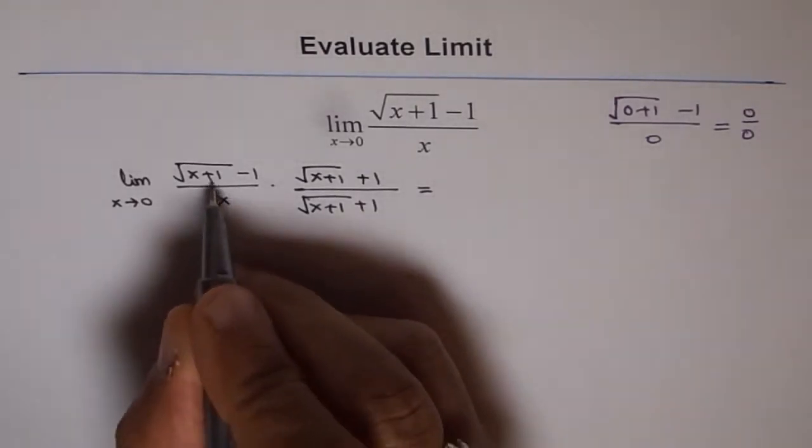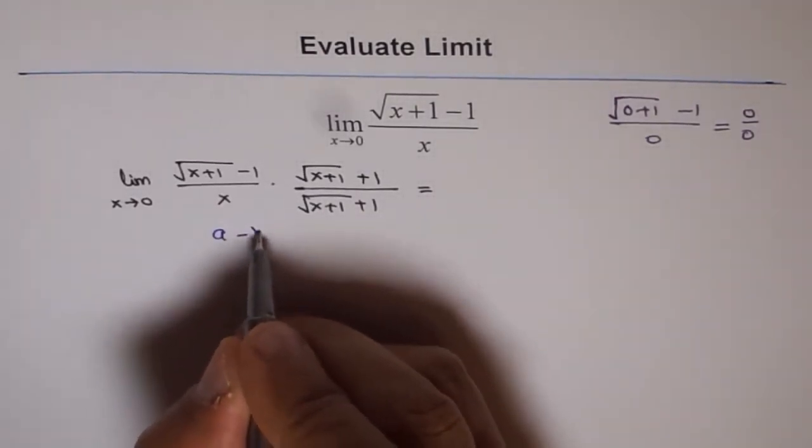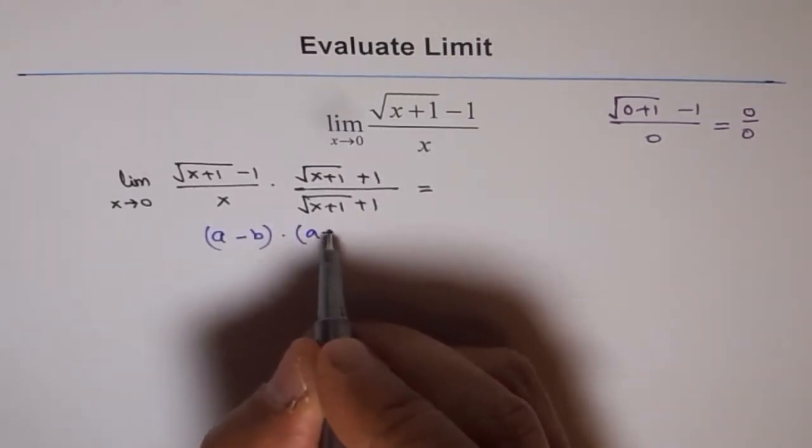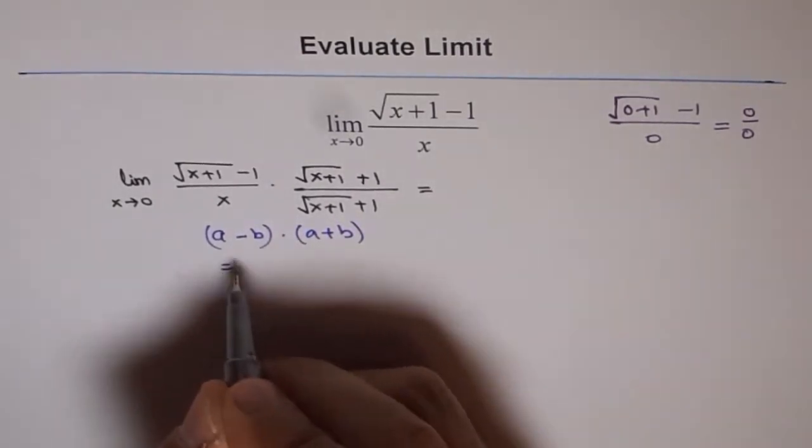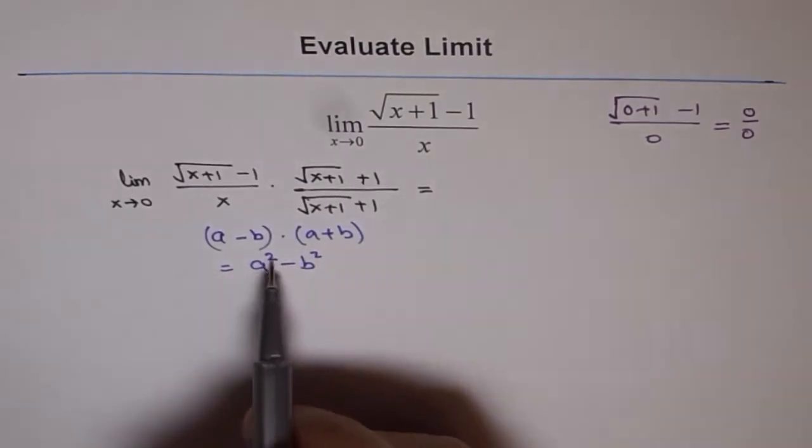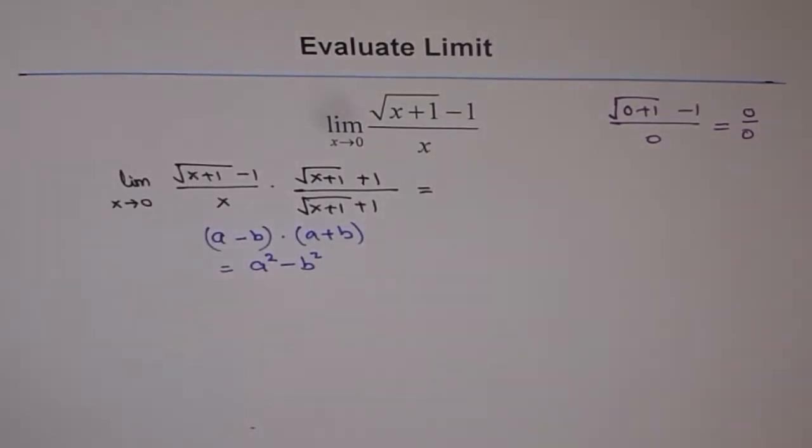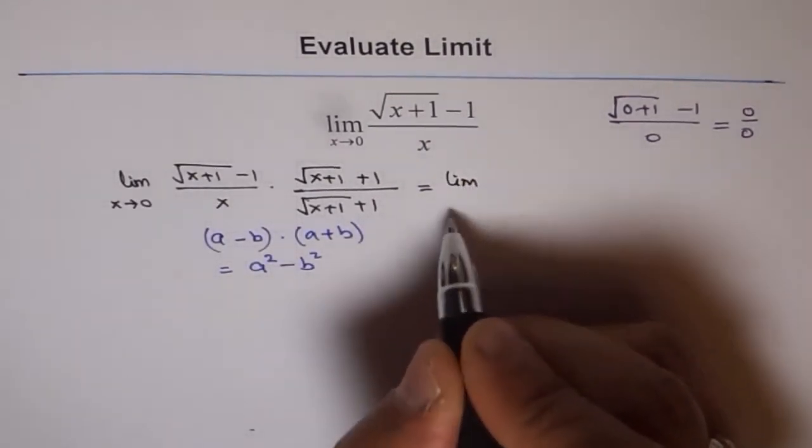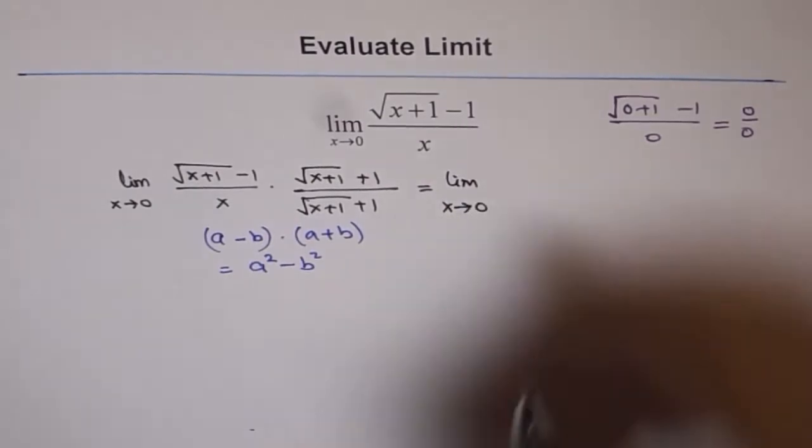Since this is like a minus b times a plus b, this equals a squared minus b squared. The square of a square root gets rid of the square root. That is the reason.